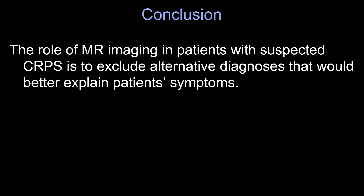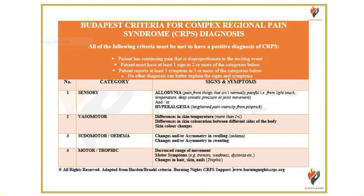This is the key message: the role of MR imaging in patients with suspected CRPS is to exclude an alternative diagnosis that would better explain the patient's symptoms — not to make the diagnosis of CRPS. Please don't write in your report 'this is typical for CRPS,' because it's probably not so easy. This is also reflected in the official clinical diagnostic criteria, which do not contain imaging at all, except for the note that no other diagnosis can better explain the signs and symptoms.